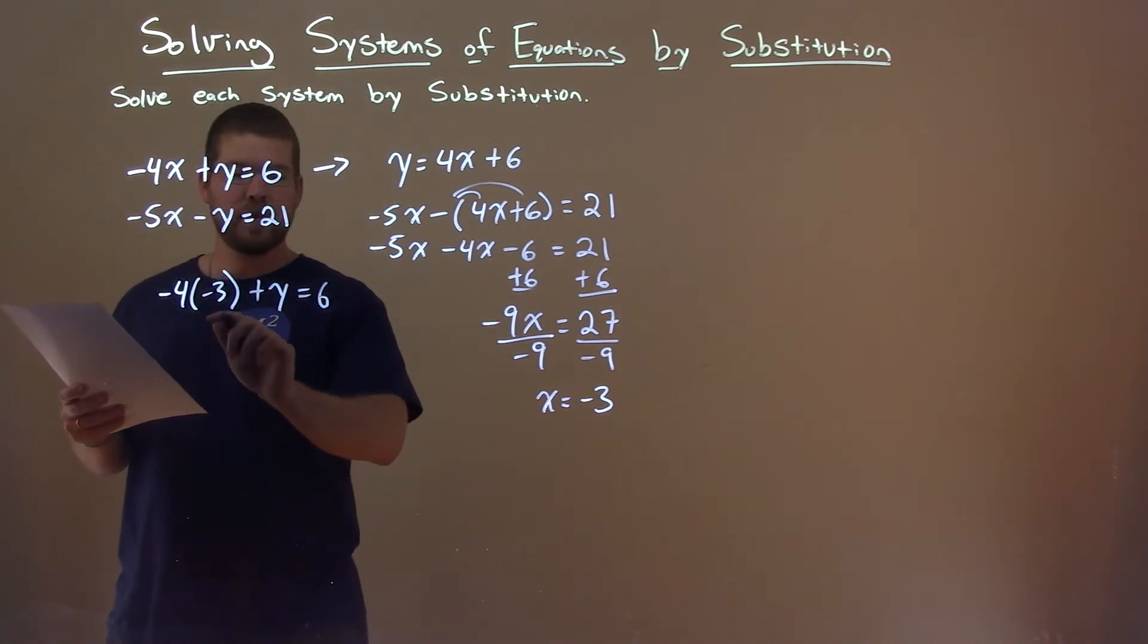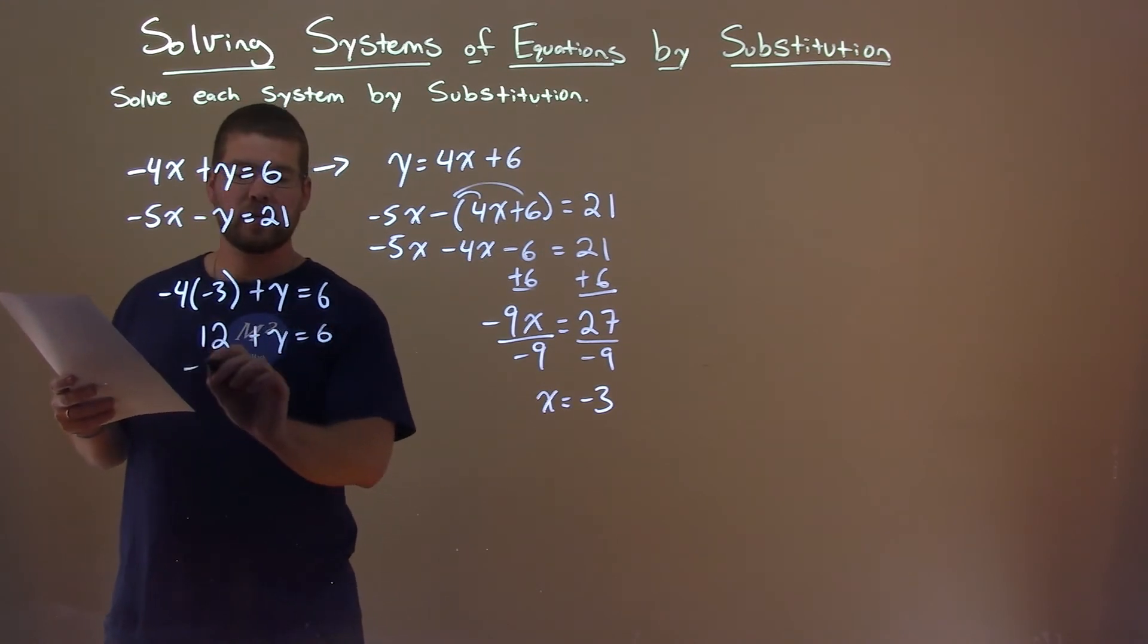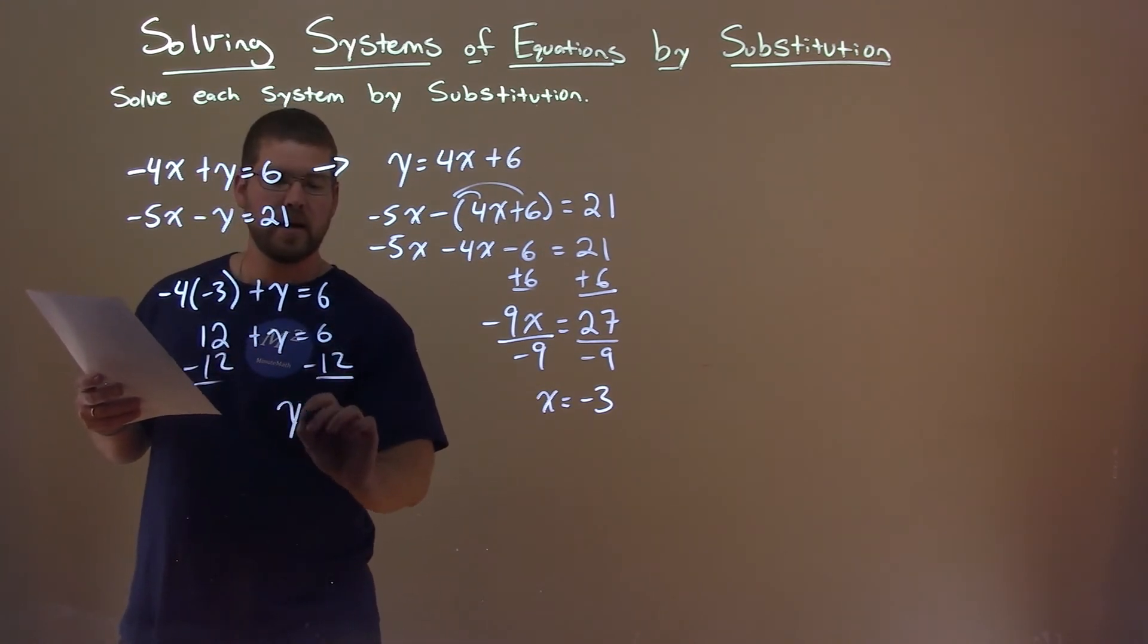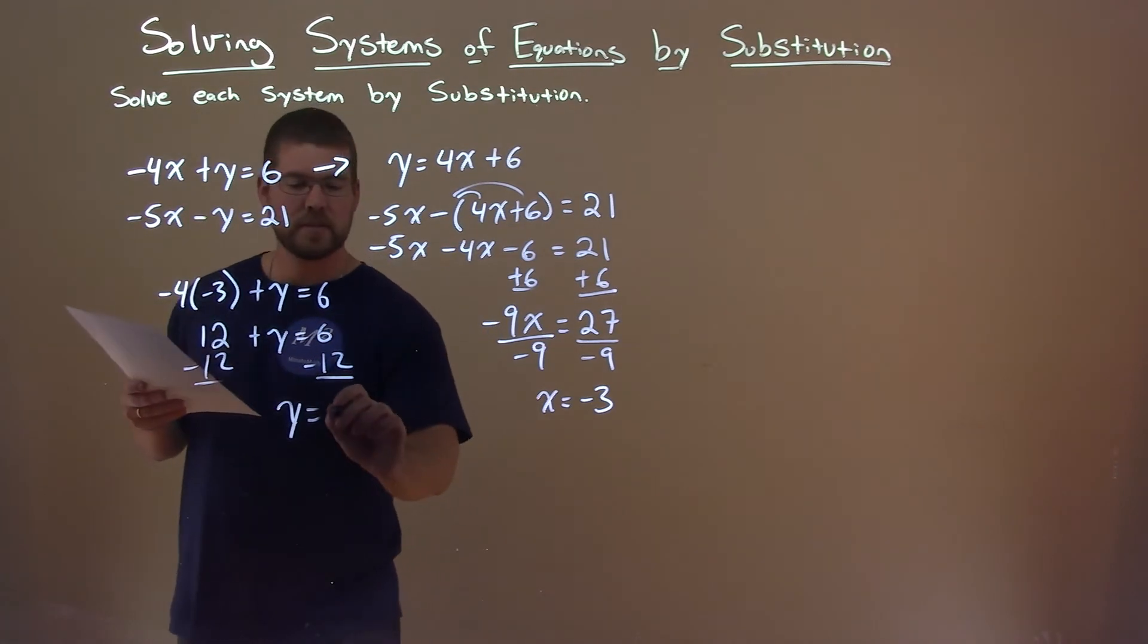Negative 4 times negative 3 is a positive 12, plus y equals 6. Subtract 12 from both sides, and y equals 6 minus 12, which is negative 6.